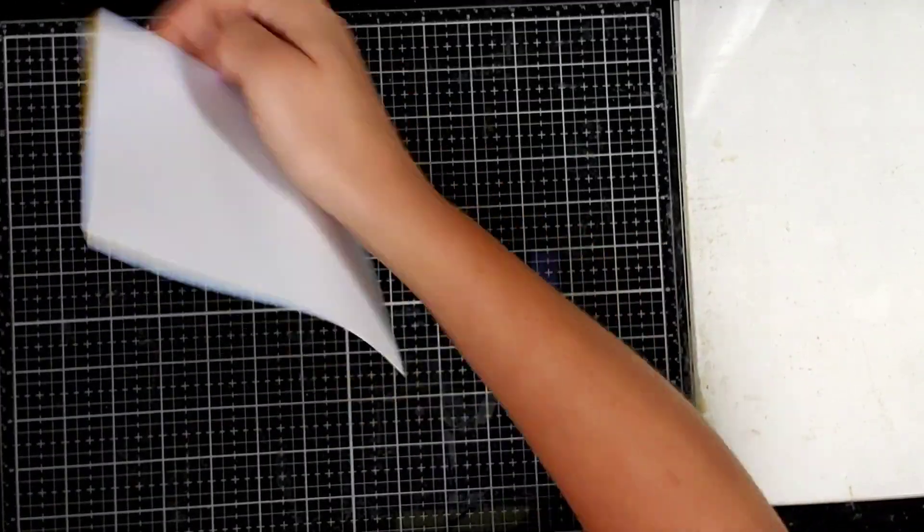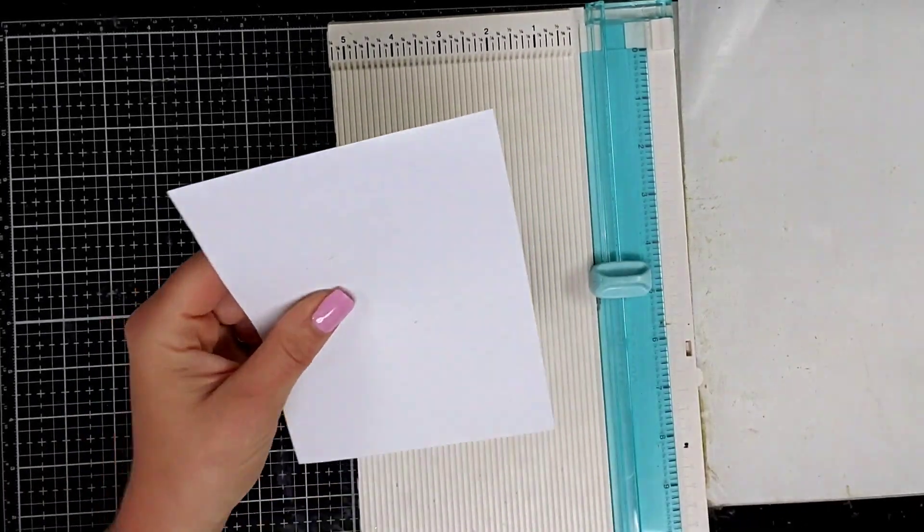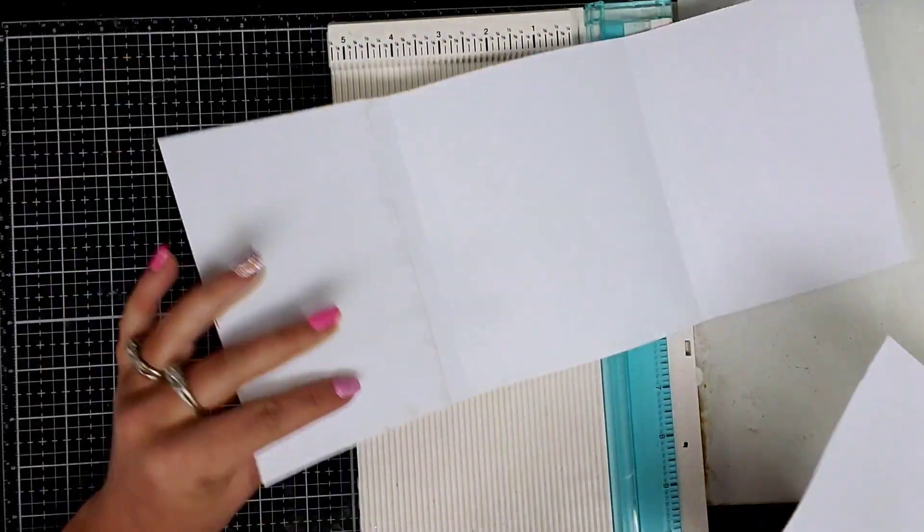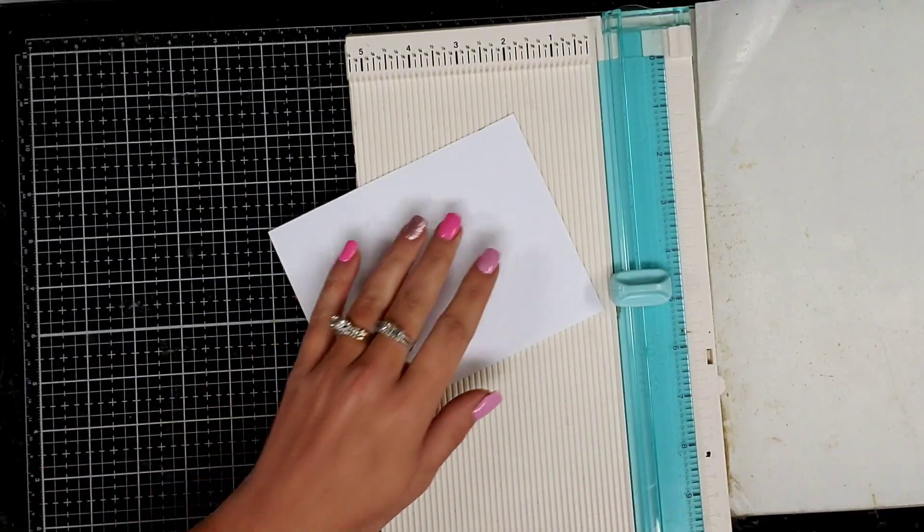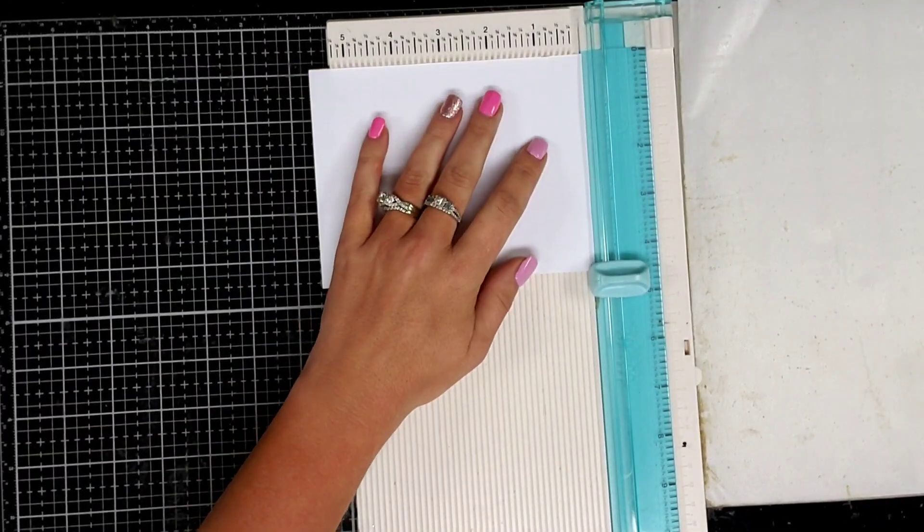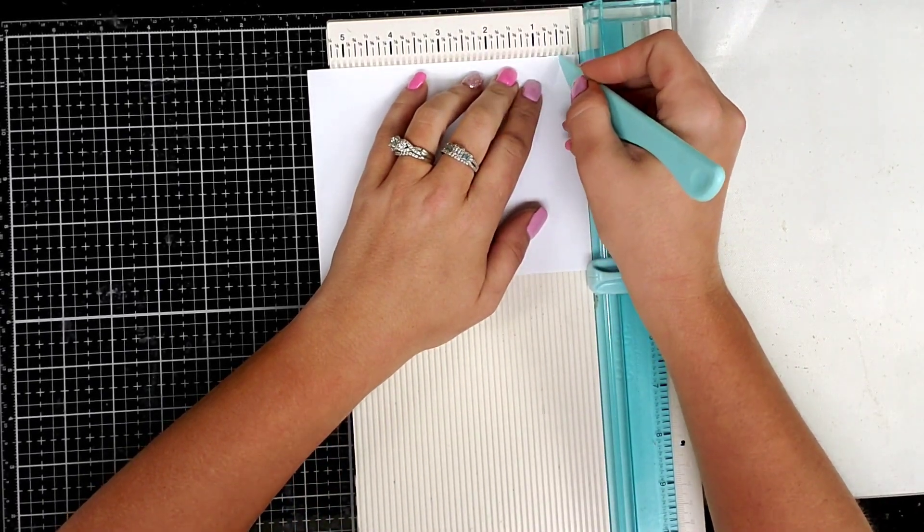Next, what we're going to do is we're going to score again. This piece of paper is our hinge. Let me show you - it's going to go right here and fold up. So we're going to make a score line at 1/4 inch. Or you can make it larger - I just didn't want to glue a whole lot on.